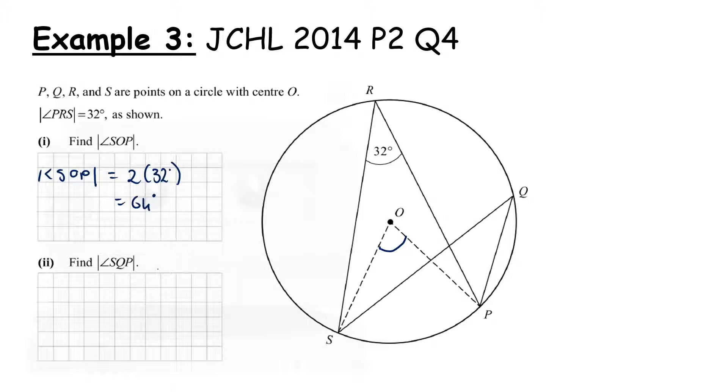Then it says find SQP. Notice that S and P are both the base points of R and Q. Using Corollary 1, we know that for any angles drawn from the same points, or any angles at the circle standing on the same arc, they must be the same size. Therefore, the angle SQP is 32 degrees.